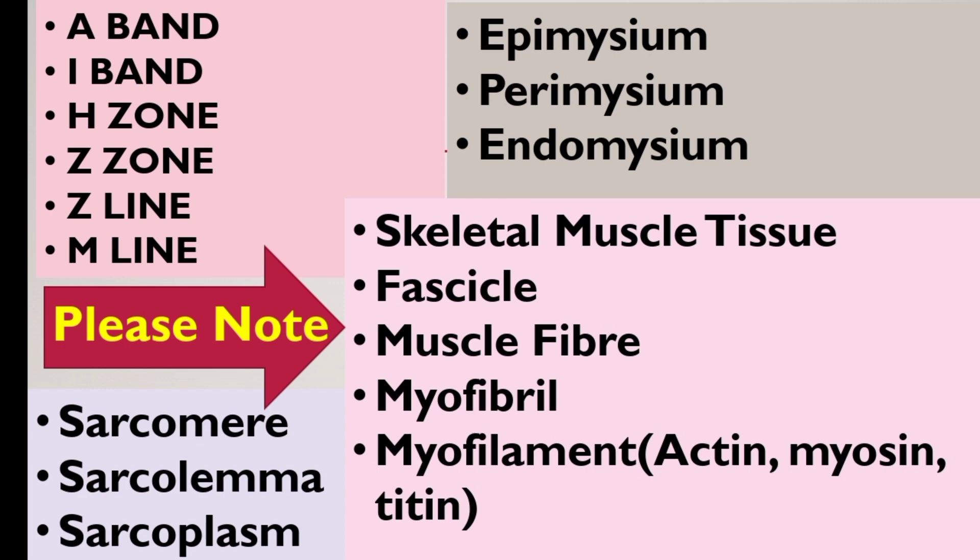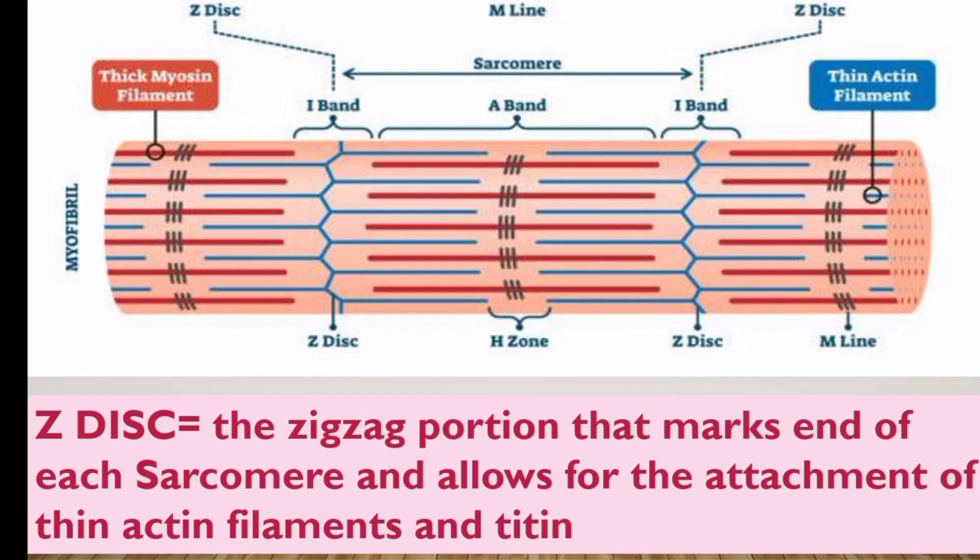Looking at the structure in the diagram, the thick red color represents the thick myosin filament.